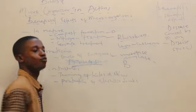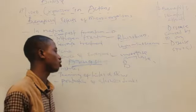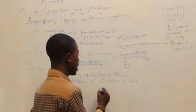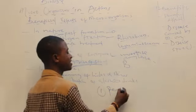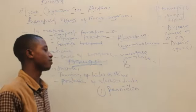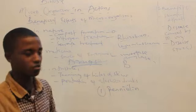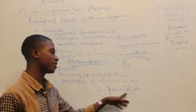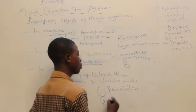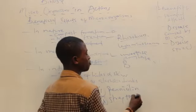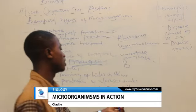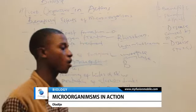Microorganisms also help in the production and manufacturing of drugs. One notable drug is penicillin, which was actually obtained from the fungi Penicillium notatum. Aside from penicillin, we also have streptomycin, which was obtained from a fungi as well. Streptomycin is an antibiotic.